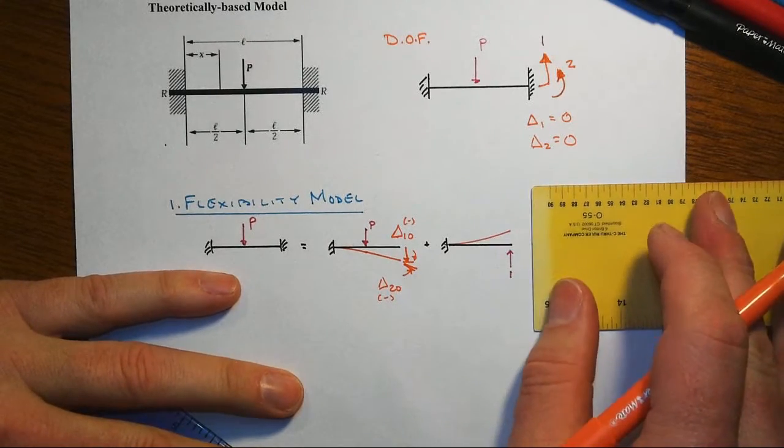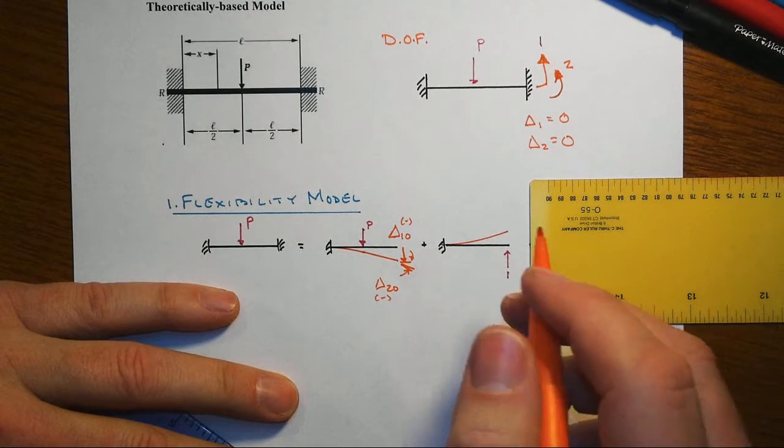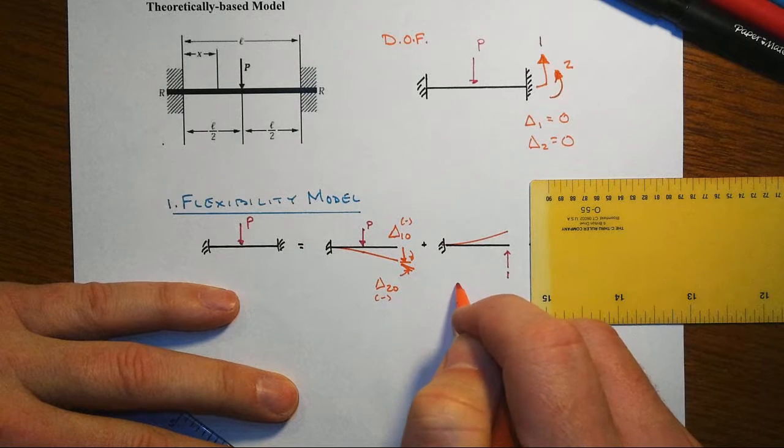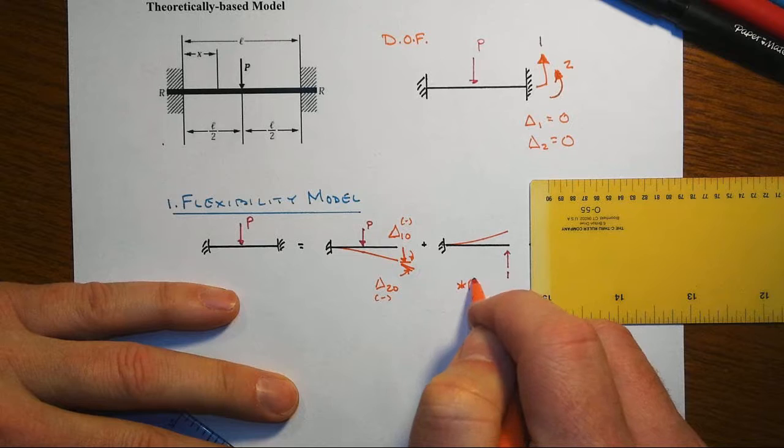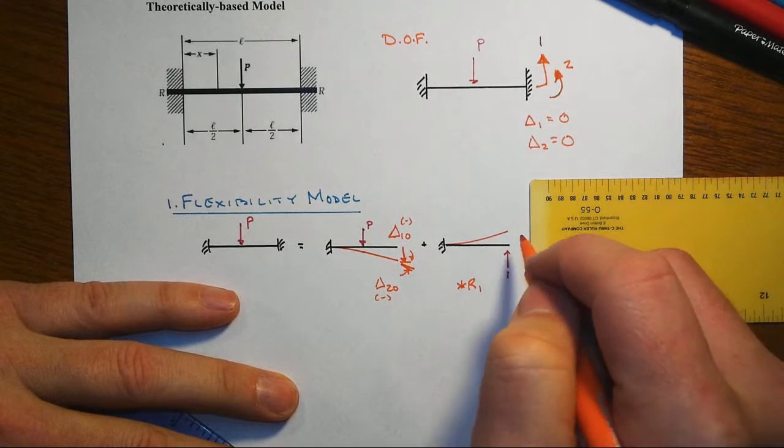Then we will put the redundant reactions back into place, but we will multiply them. It's easier to calculate with just a unit load, so we have to multiply those by the actual, but unknown at this point, value of the redundant reaction one.